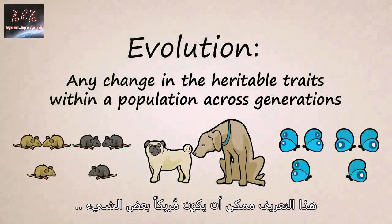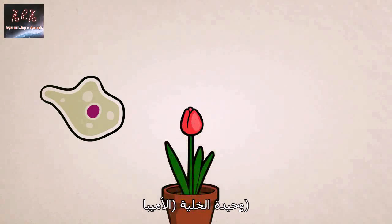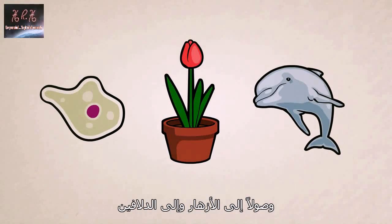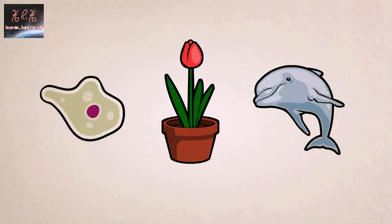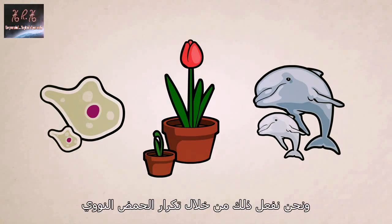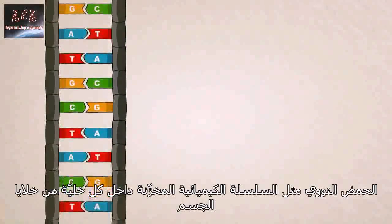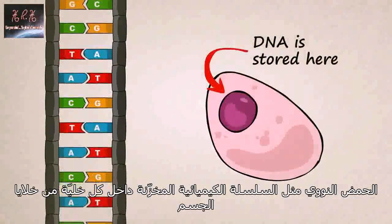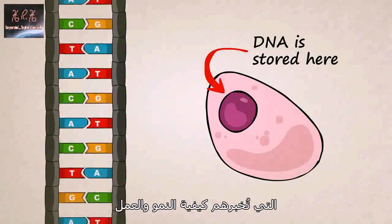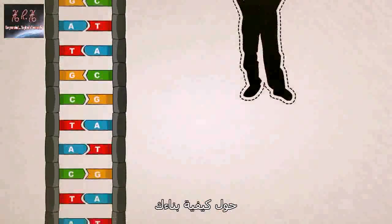This definition can be a bit confusing, so let's see how it works. All healthy living things — from single-celled amoebas to flowers to dolphins — are capable of reproduction. We have children, we make copies of ourselves. We do this by duplicating our DNA and passing that DNA on to future generations. DNA is a chain-like chemical stored inside each one of your cells which tells them how to grow and function. Your DNA contains coded information on how to build you.